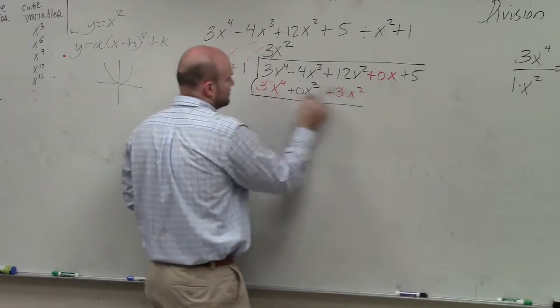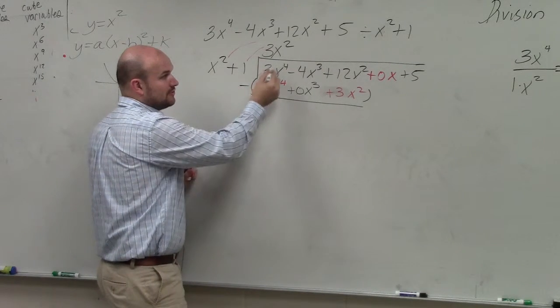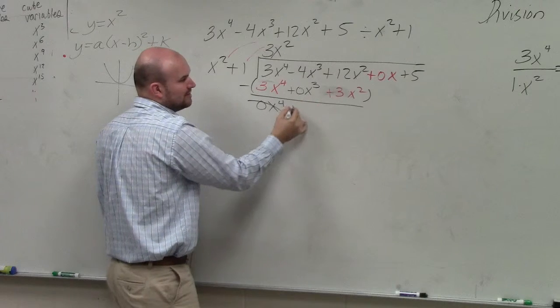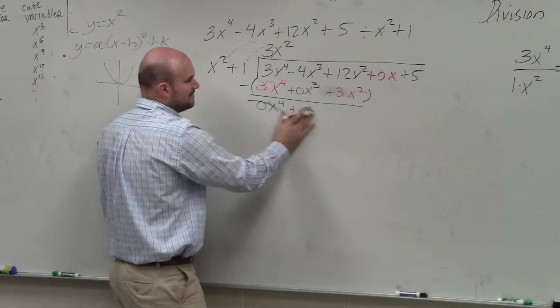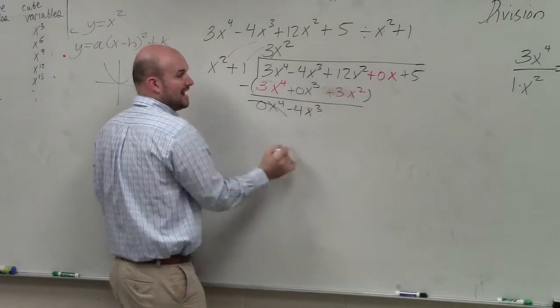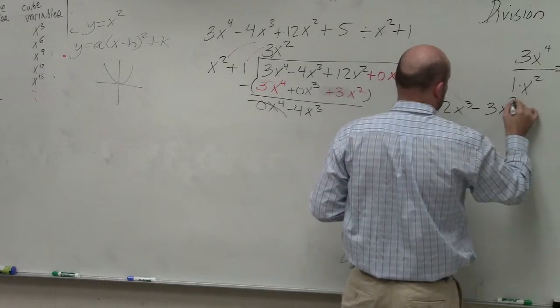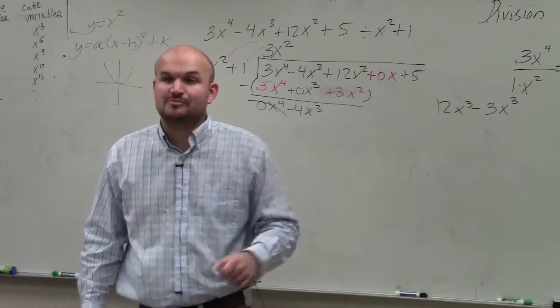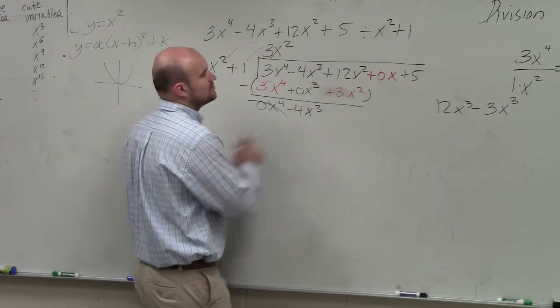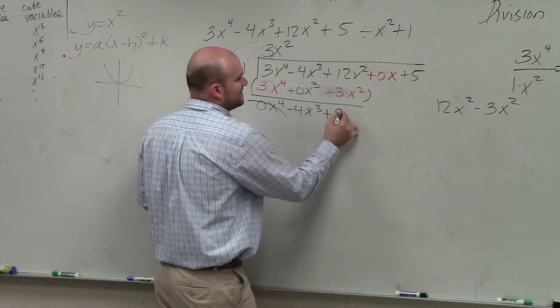Now we subtract the rows. Again, this is where almost everybody makes a mistake, so be very careful what the signs are. 3x to the fourth minus 3x to the fourth is 0x to the fourth. Negative 4x cubed minus 0 is still going to be negative 4x cubed. Then 12x squared minus 3x squared—think of it as like 12 apples minus 3 apples, right? It's going to be 9 apples. The x squared still stays there.